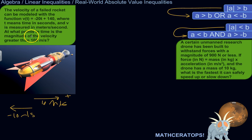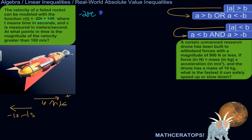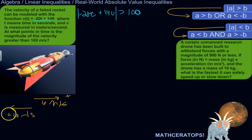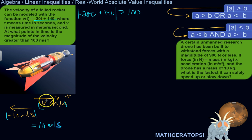We want the magnitude of the velocity to be greater than 100 meters per second. The velocity is negative 20t plus 140, and we want to know when the absolute value of that is greater than 100 meters per second. The absolute value tells us the magnitude — so whether it's negative 10 or positive 10 meters per second, the absolute value is 10. That gets rid of the direction.